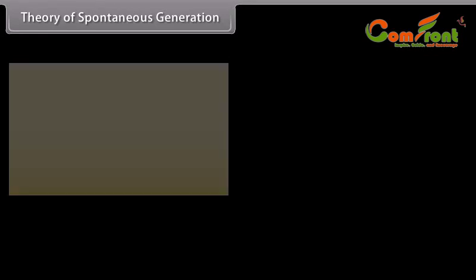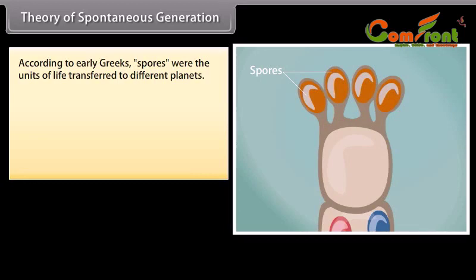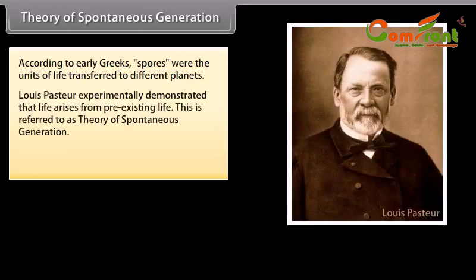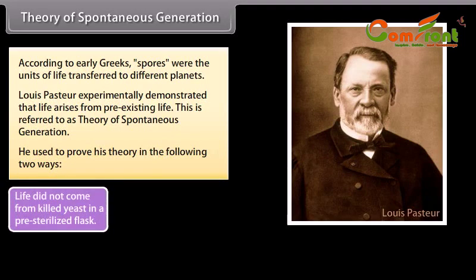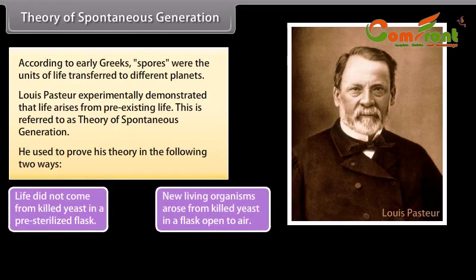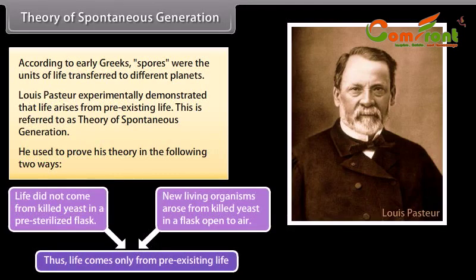Theory of Spontaneous Generation. According to early Greeks, spores were the units of life transferred to different planets. Louis Pasteur experimentally demonstrated that life arises from pre-existing life — this is referred to as the Theory of Spontaneous Generation. He proved his theory in two ways: life did not come from killed yeast in a pre-sterilized flask, but new living organisms arose from killed yeast in a flask open to air. Thus, life comes only from pre-existing life.